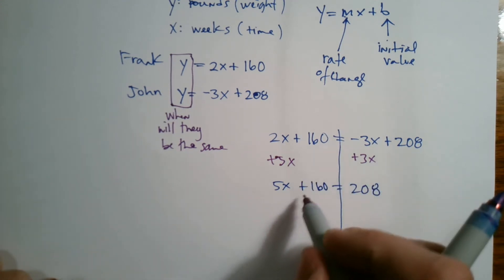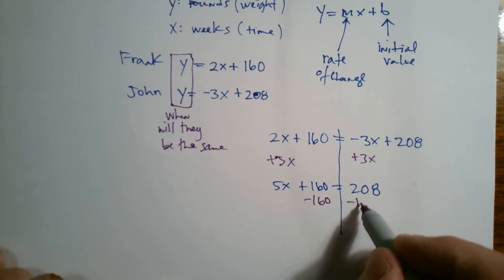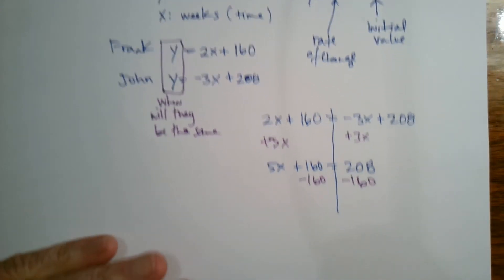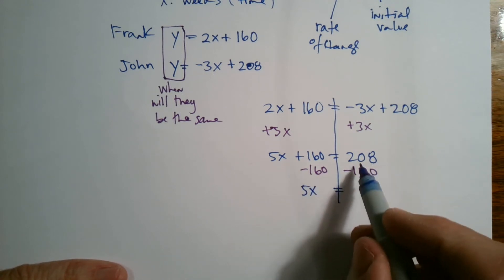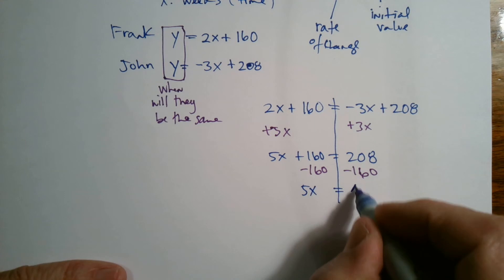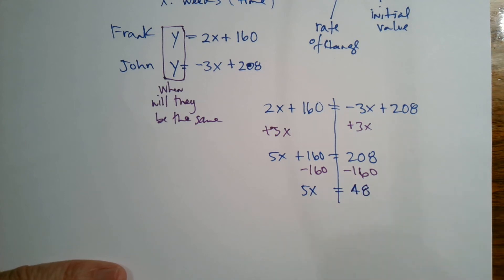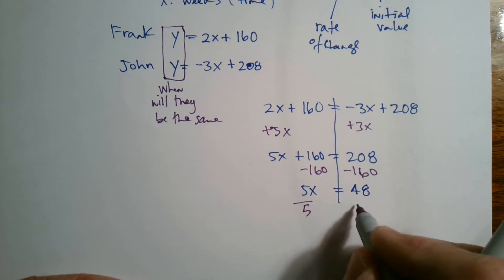Right. And then I'm going to subtract 160 from both sides. Get the constants all on one side and I get 5X equals, let's see, so that would be 48. And then now divide both sides by five.